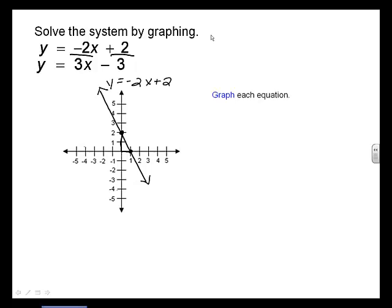To graph the equation 3x minus 3, graph the y-intercept at 0, negative 3, and use the slope of 3, which means you move up three units for every one unit you move to the right, to find another point. Then, draw a line connecting these two points.